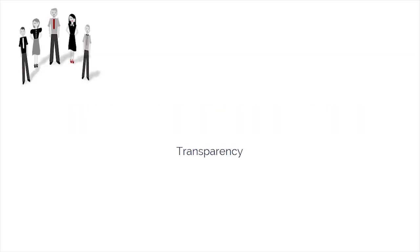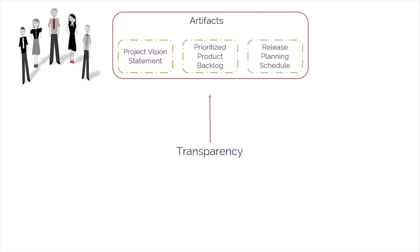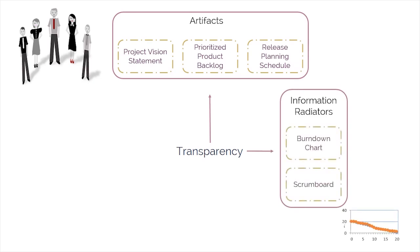In Scrum, transparency is provided by openly sharing the project vision statement, which can be viewed by all stakeholders and the Scrum team. The prioritized product backlog with user stories can be viewed by everyone both inside and outside the team. Also included are the release planning schedule, which may be coordinated across multiple Scrum teams, and information radiators such as the Scrum board and burndown charts, which make a team's progress clearly visible to all.